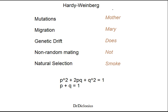And in order for this to be maintained, there have to be different conditions that have to be met. And normally they say these five conditions need to be met. And these conditions, actually what I have listed here, these five are actually deviations from Hardy-Weinberg. But obviously the ones that you need, you just put no in front of it. So my mnemonic is Mother Mary does not smoke.